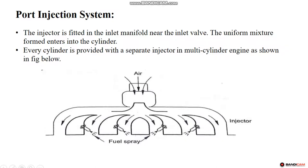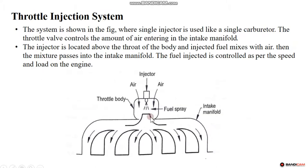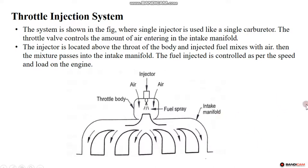In throttle injection, fuel is supplied to every cylinder from a central throttle body — it is not the throttle itself, but the throttle body area. This is a multi-point injection arrangement. The throttle and port injection systems differ in where the fuel is injected.